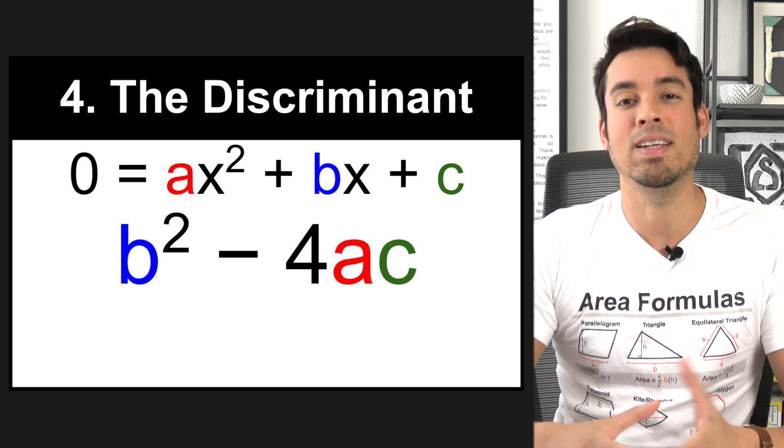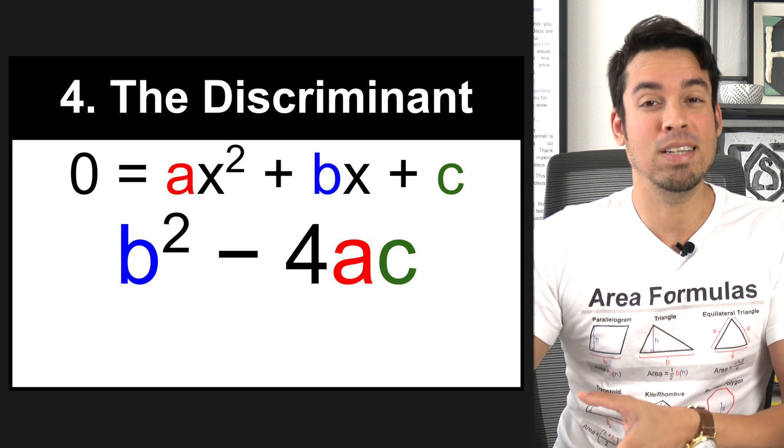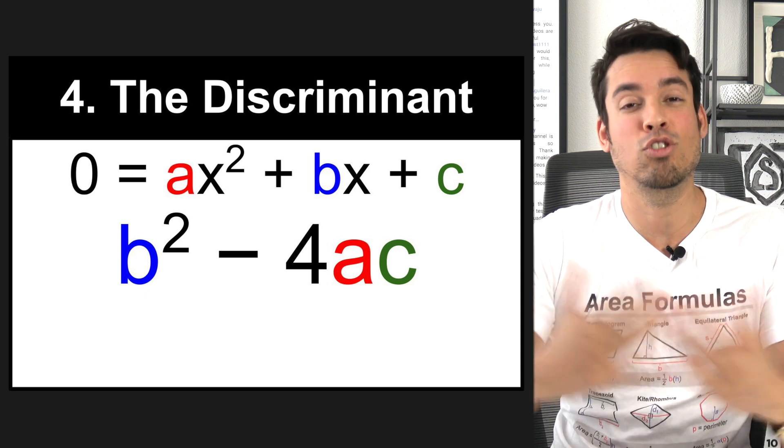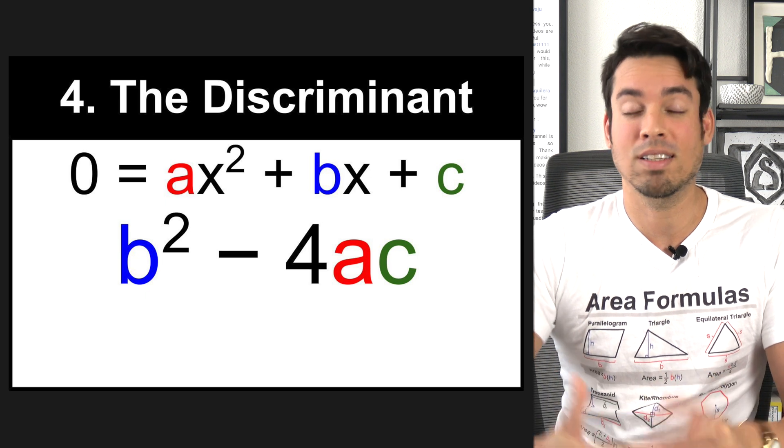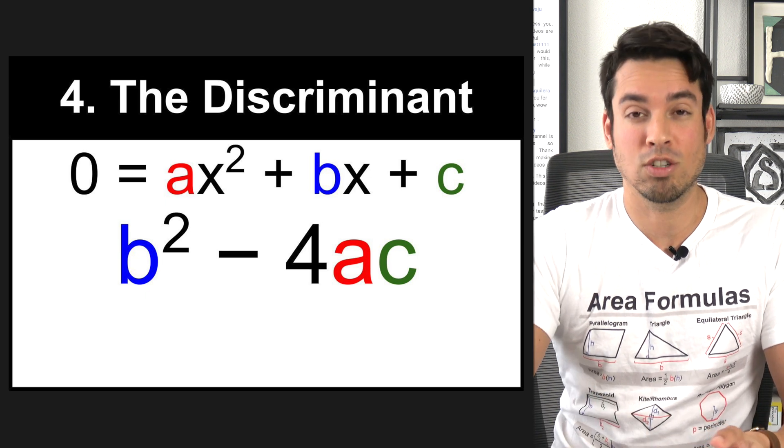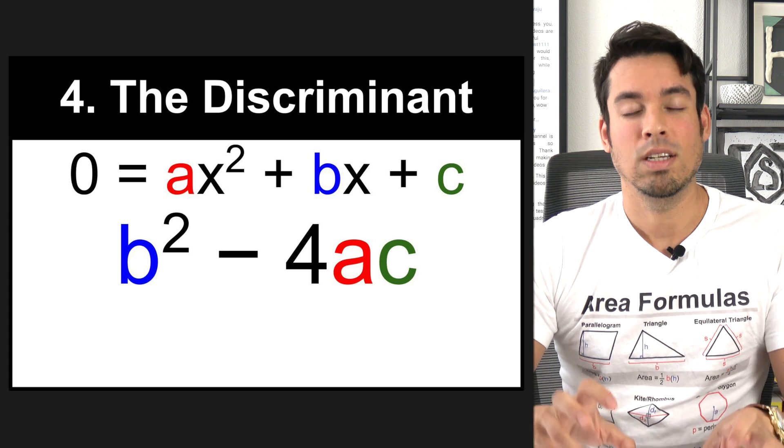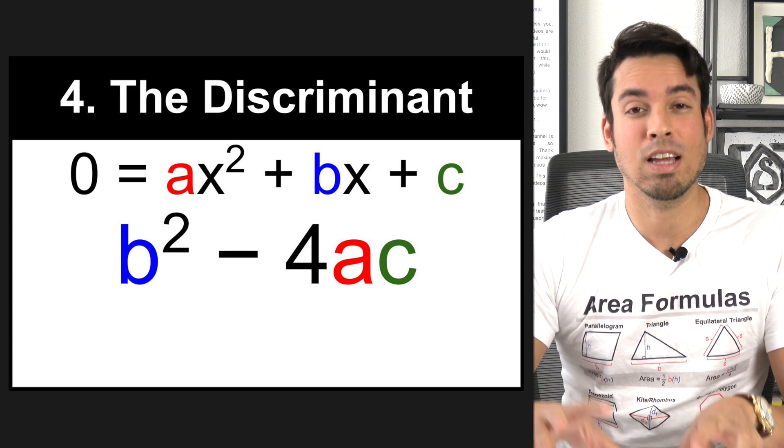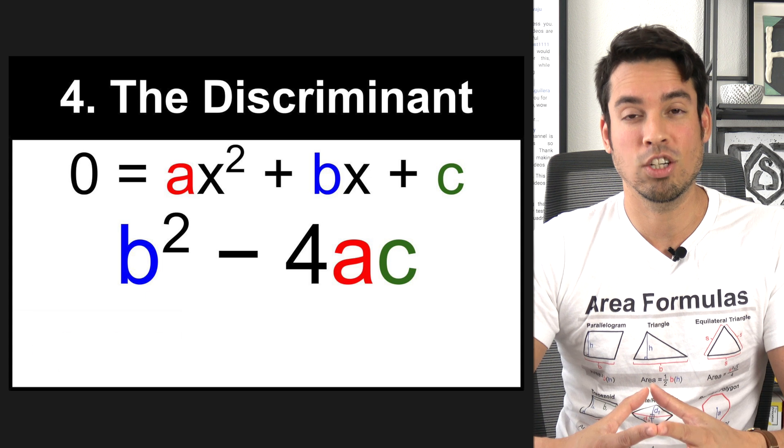The next precision formula also involves quadratics. And of course, it is the discriminant. Now, the discriminant is just a piece of the quadratic formula, so it's not super essential that you have to go out of your way to memorize this because if you know the quadratic formula, you know the discriminant. But what can be really helpful is if you know what the discriminant says about the nature of the solutions of a quadratic equation.